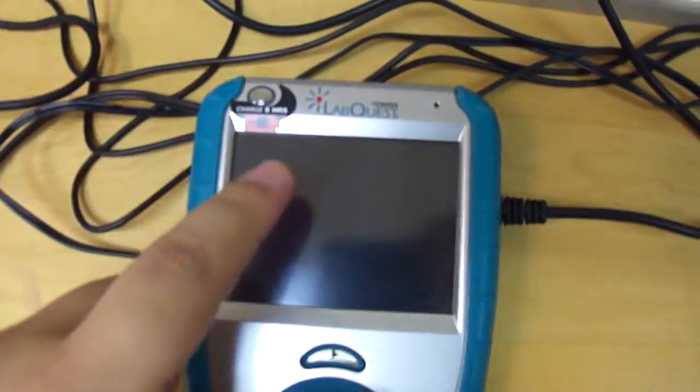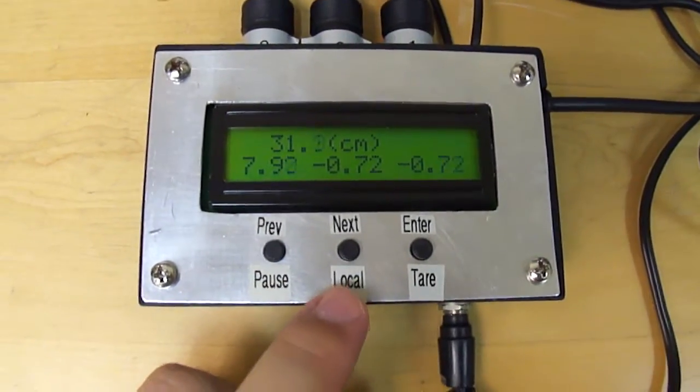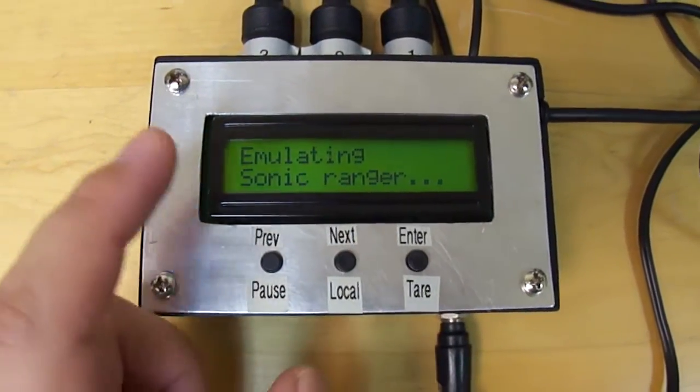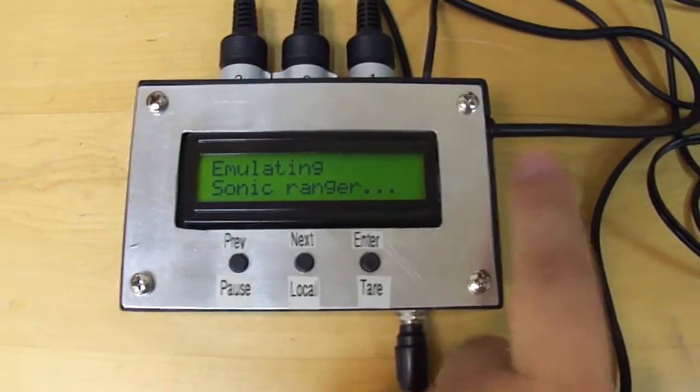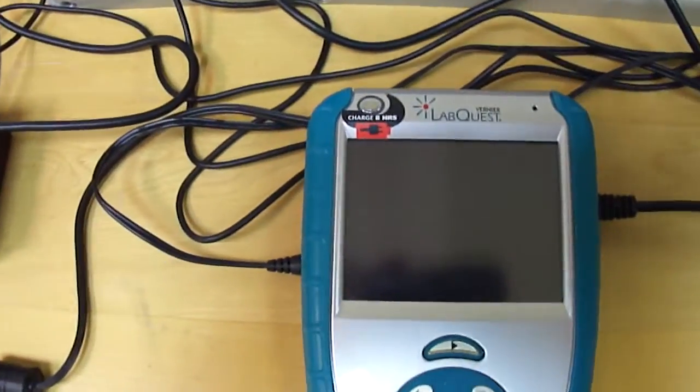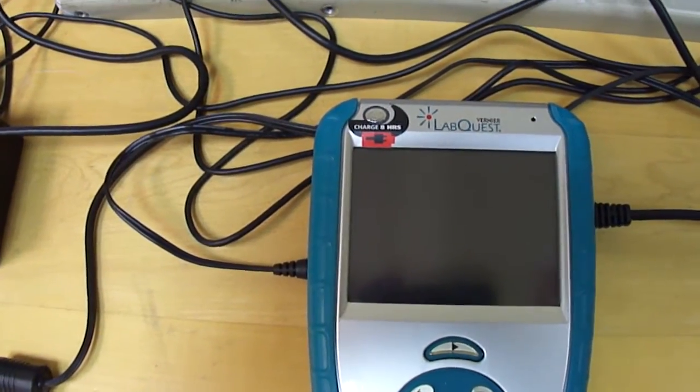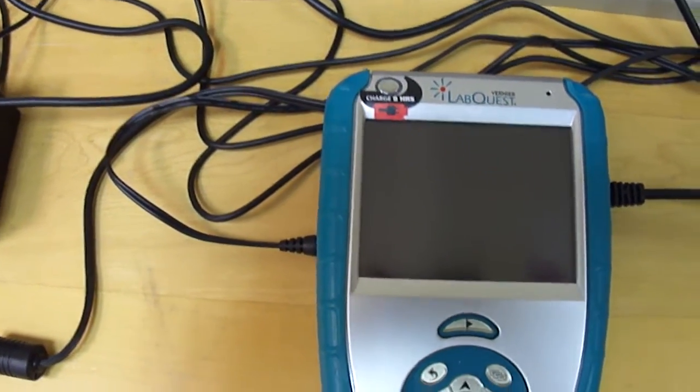And before I power the LabQuest I want to push the middle button. It says local, local or remote. So if I push remote or local here, it says emulating Sonic Ranger. So it will be outputting pulses emulating Sonic Ranger so the LabQuest can pick up the result. But on the other hand it's going to pick up 1 meter plus the exact location because Sonic Ranger cannot report 0 meters.